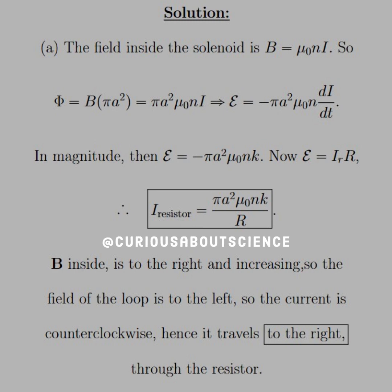We're going to use the same tools we've been using. For Part A, we know that the field inside — quasi-static approximation — is B equal to mu-naught nI. The flux through this cross-sectional area, which is a circle, so it's pi A squared, we plug in the B field and we see that our total flux is pi A squared mu-naught nI.